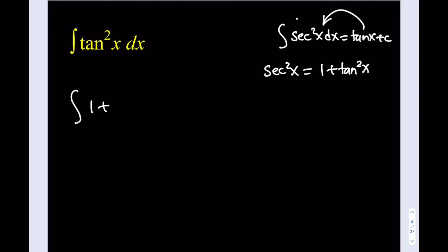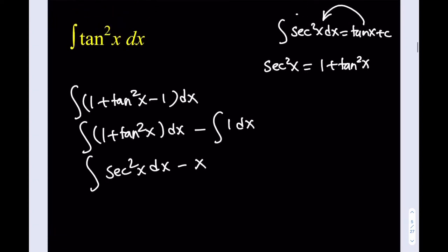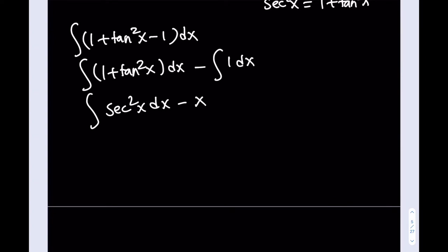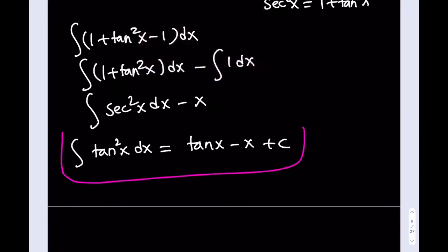I'm going to add 1 and then subtract it, so that I can separate them. We know 1 plus tangent squared equals secant squared. So this becomes the integral of secant squared x dx minus the integral of 1 dx. The integral of secant squared is tangent x, and 1 integrates to x. So the integral of tangent squared x dx equals tangent x minus x plus c. This is very important — we're going to be using this in other problems as well.